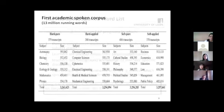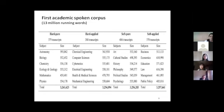So the first step of the project was to create what we call the first academic spoken corpus. This corpus would be used to develop the list. The corpus has 13 million running words — to the best of my knowledge, this is the largest academic spoken corpus ever created. It represents transcripts of lectures, seminars, labs, and tutorials recorded at different institutions in different parts of the world, for example in the UK, US, New Zealand, and Hong Kong.